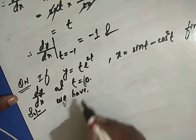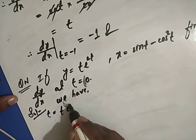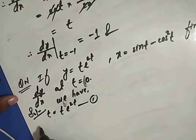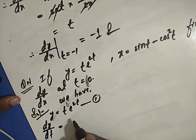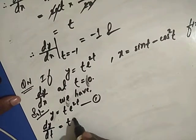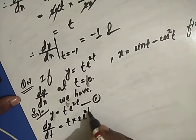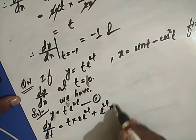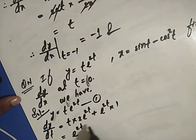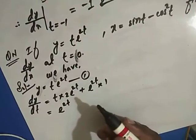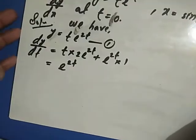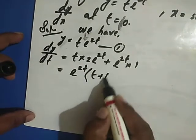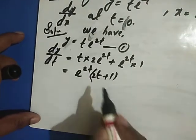Solution: We have y equals t times e to the power 2t. To differentiate, we use the product rule: dy/dt equals u times v' plus v times u'. This gives dy/dt equals t times e to the power 2t times 2, plus e to the power 2t times 1, which equals e to the power 2t times (2t plus 1).